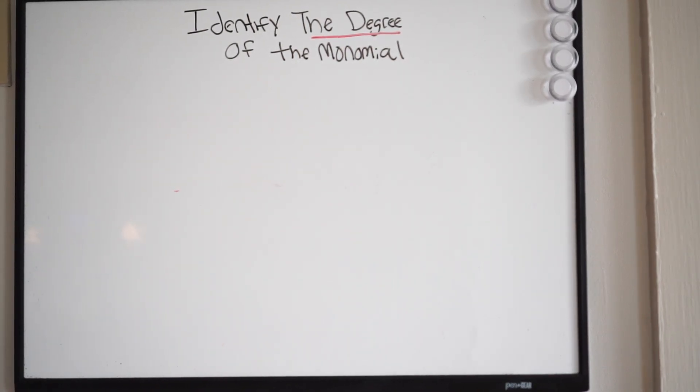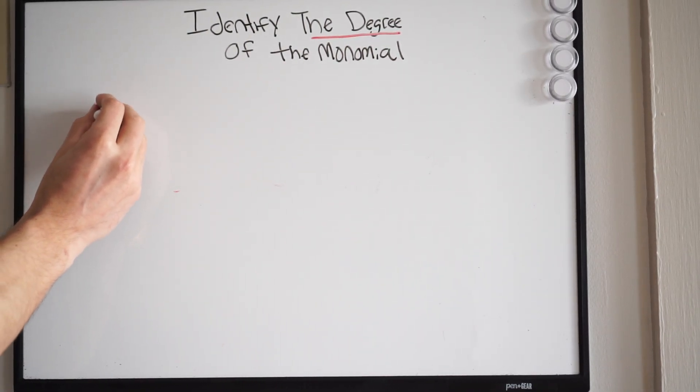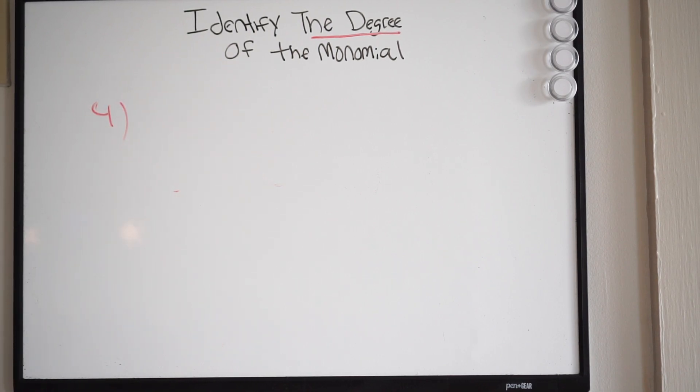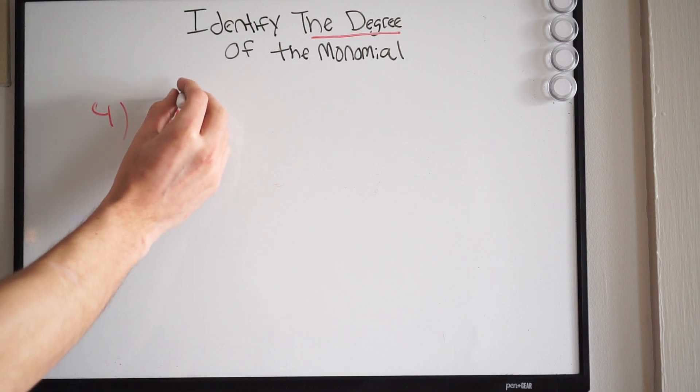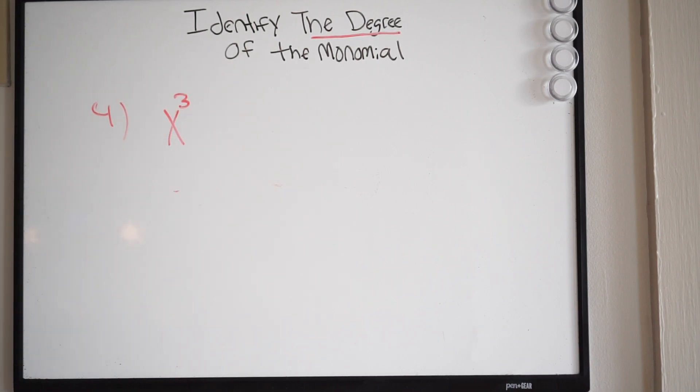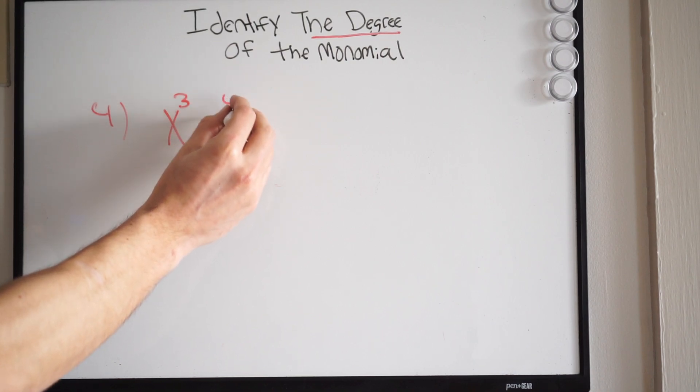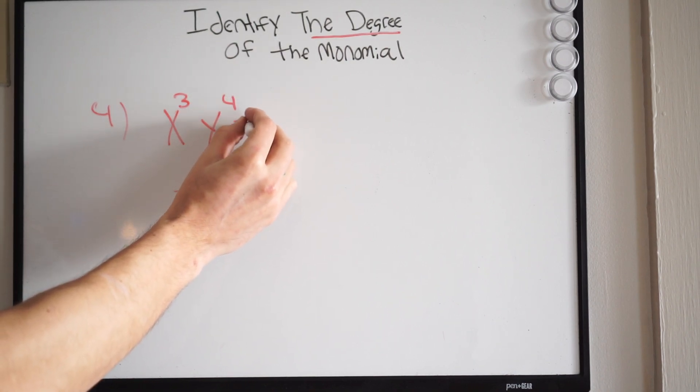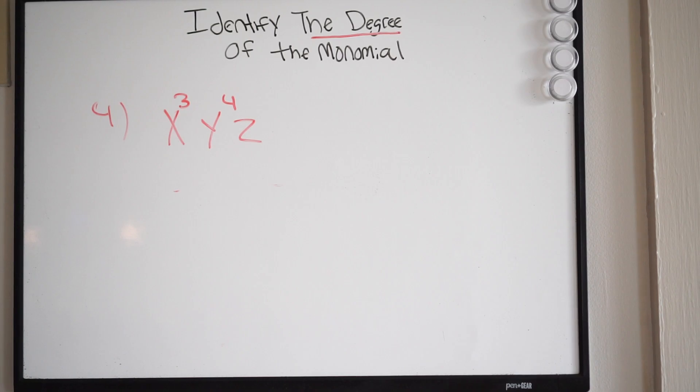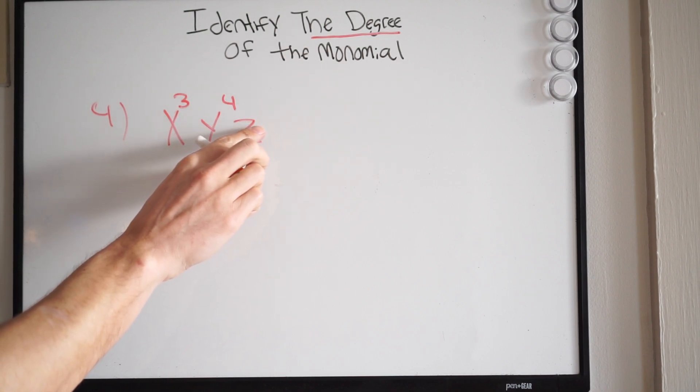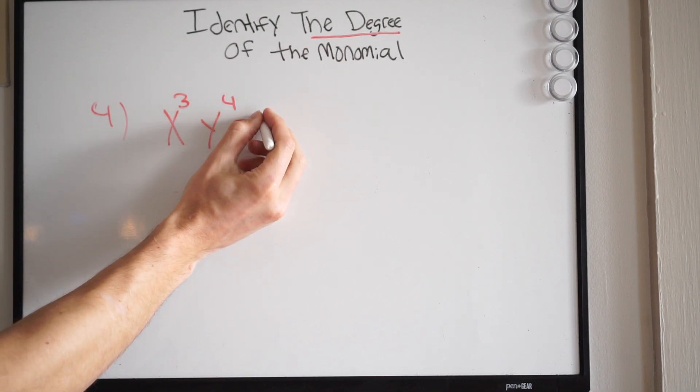Okay. So number 4, we can have, let's say, x cubed, 5 to the 4th, and then we'll just have z. Okay, remember, we're only looking at the exponents on the variables. So notice we don't have a variable here, but we know that there's really a 1.